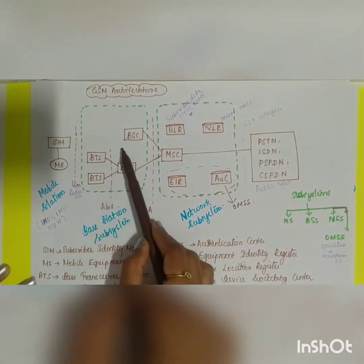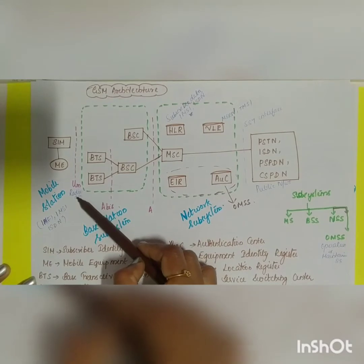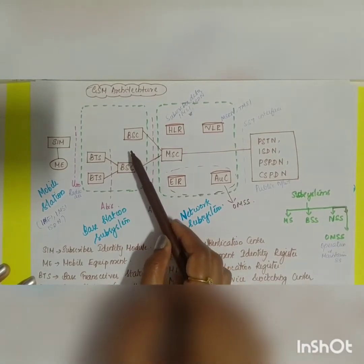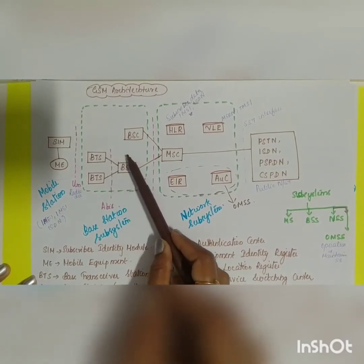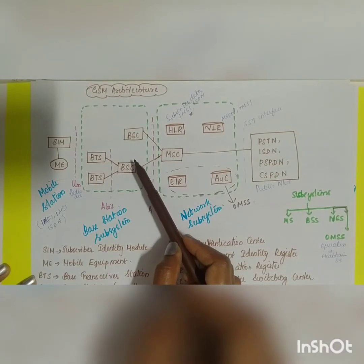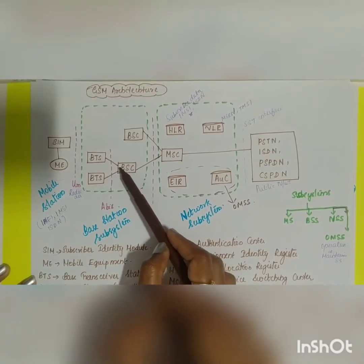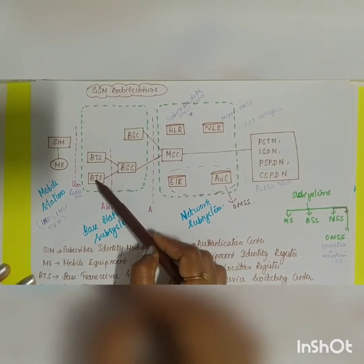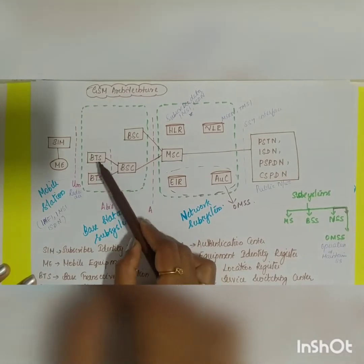The mobile station connects to the Base Station Subsystem via an interface called the radio or air interface (Um interface). The Base Station Subsystem consists of two parts: the BTS (Base Transceiver Station) and the BSC (Base Station Controller). One BSC can control more than one BTS. The BTS performs encoding, encryption, multiplexing, modulation, and feeds the RF signal to the antenna.